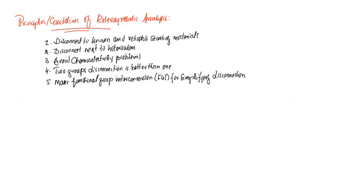The second principle says that whenever we find a heteroatom in a molecule, we should make a disconnection next to the heteroatom. The third guideline addresses the problem of chemoselectivity: a two-group disconnection is better than a one-group disconnection. The fifth principle concerns functional group interconversion — whenever we encounter a difficult example, we can go for a functional group interconversion to make a molecule easier for disconnection.